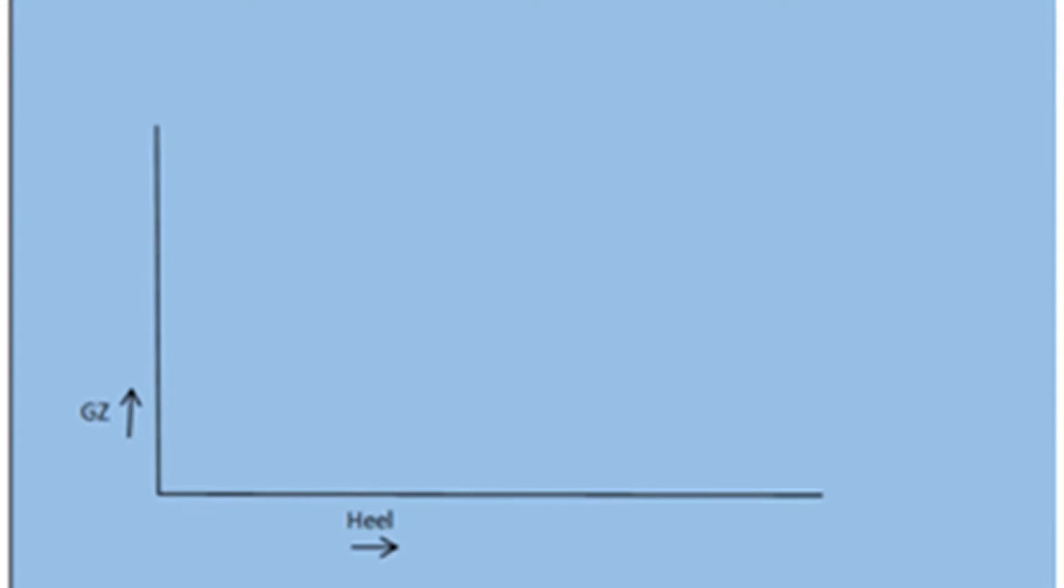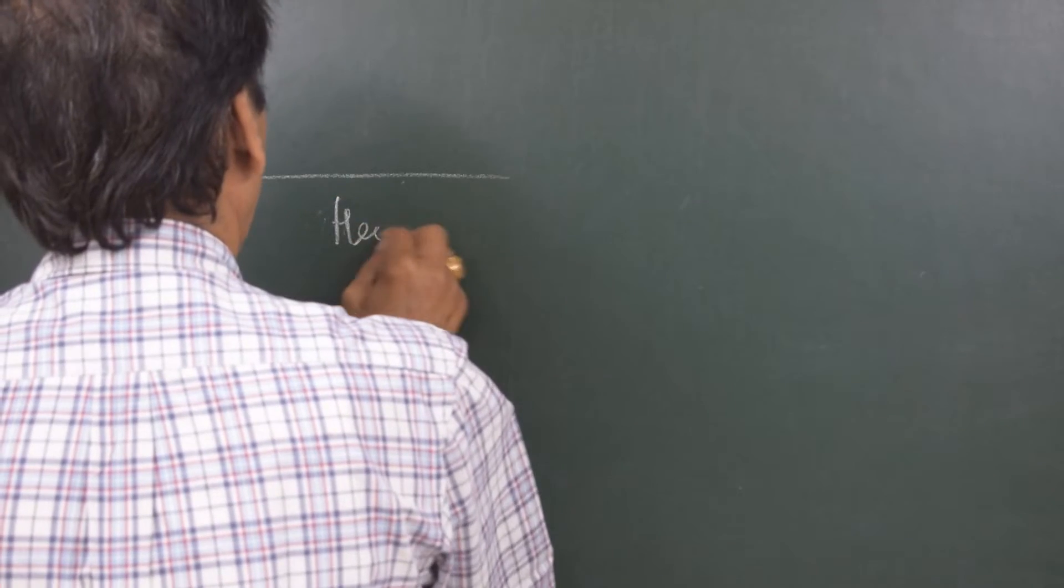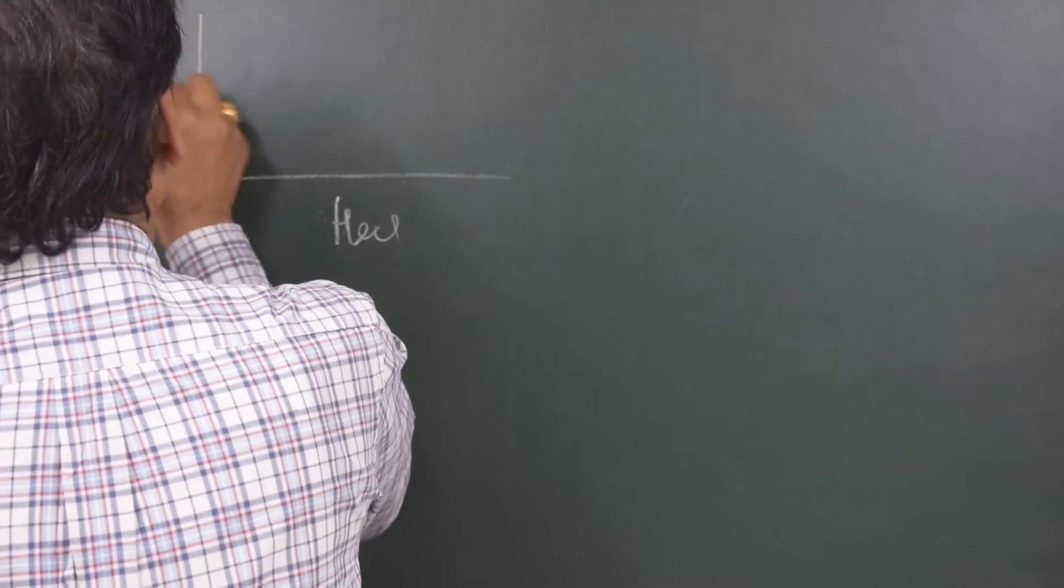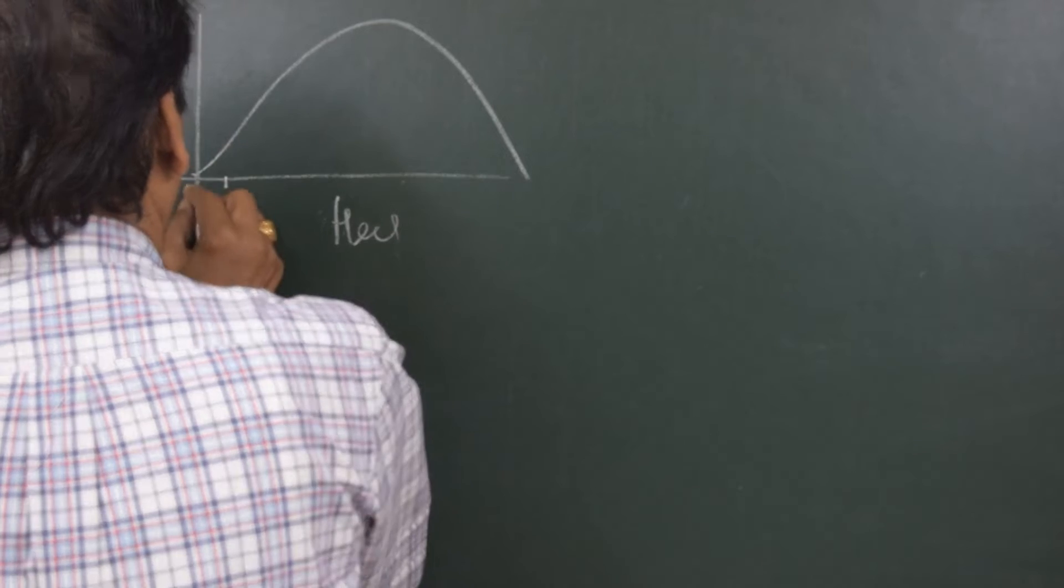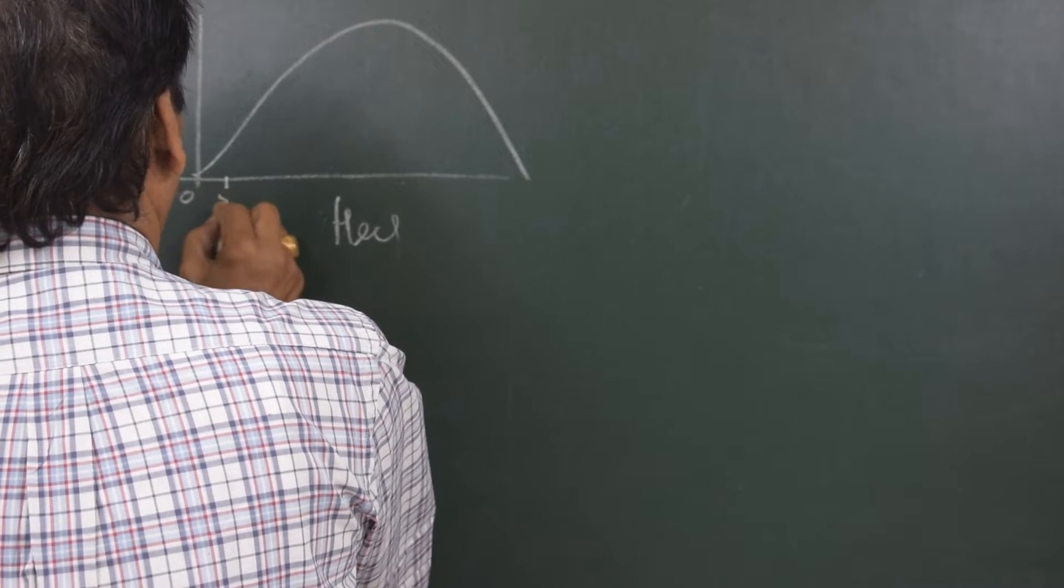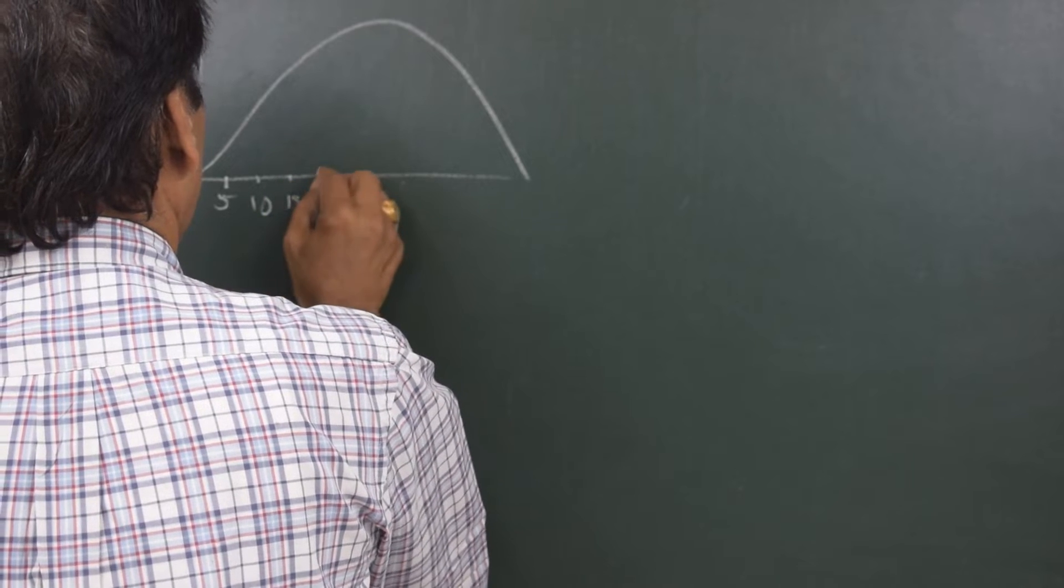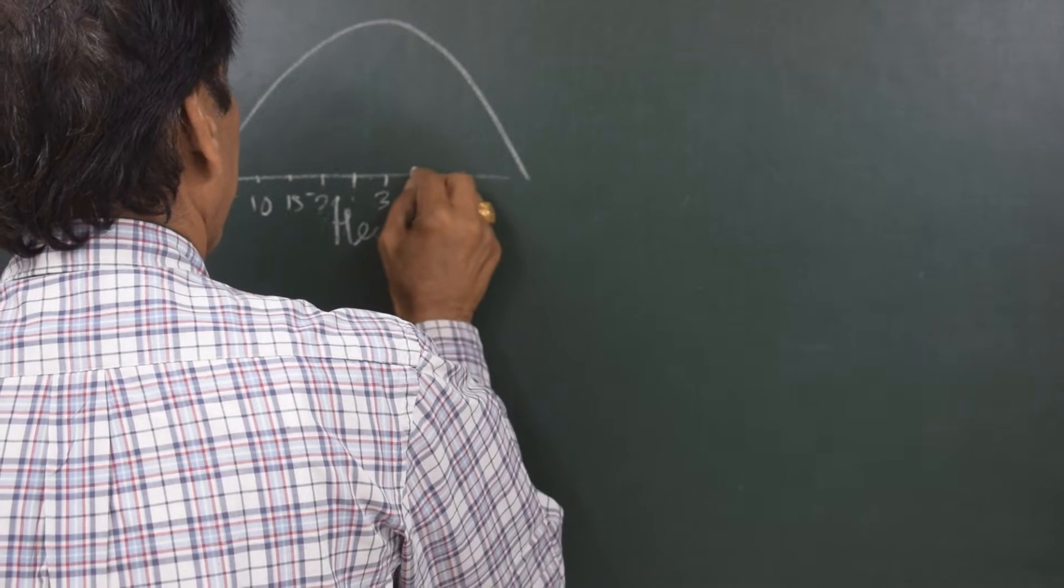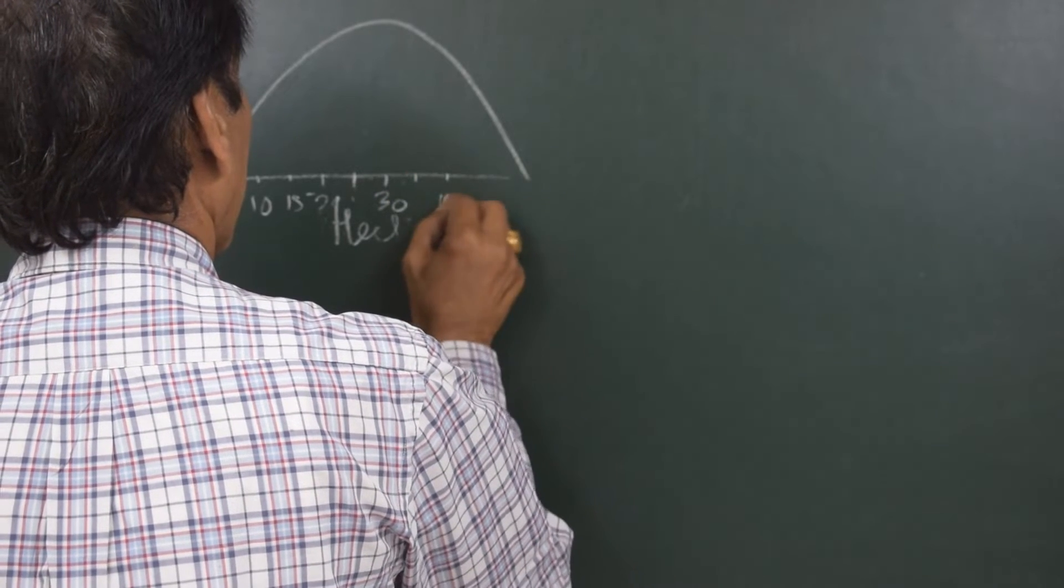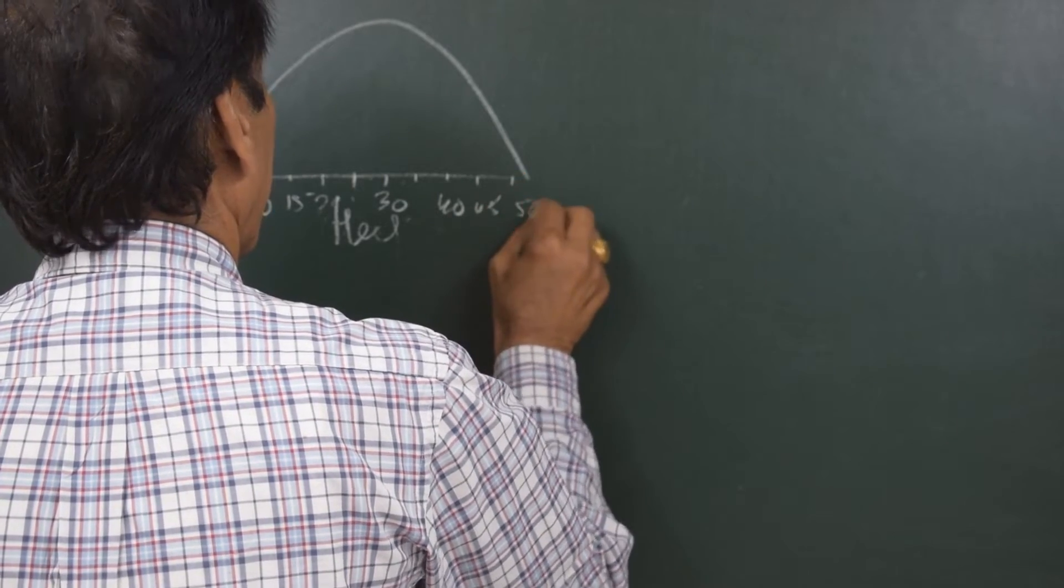So what we do is we pick up the KN values from the KN curves and from that we subtract KG sin theta to get the righting lever. And this is how the righting lever curve is made. So let's draw the GZ curve. This is the heel X axis and this is the righting lever GZ. Let's say this is the GZ curve. And 0, 5 degrees, 10, 15, 20, 25, 30, 35, 40, 45, 50 and so on.